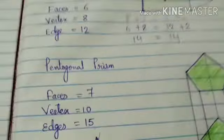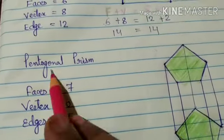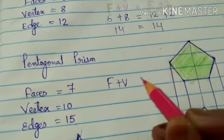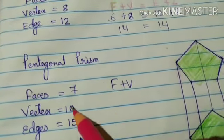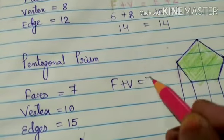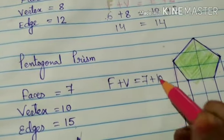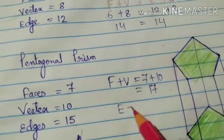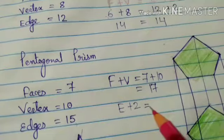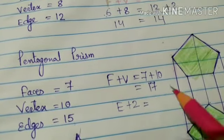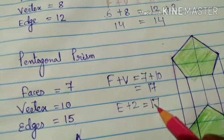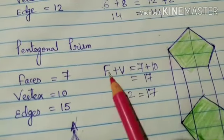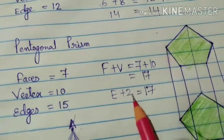Now let's come to the pentagonal prism. Here F plus V is 7 plus 10, that is 17. And now E plus 2: it is 15 plus 2, so directly 17. Now you can see F plus V equals E plus 2.